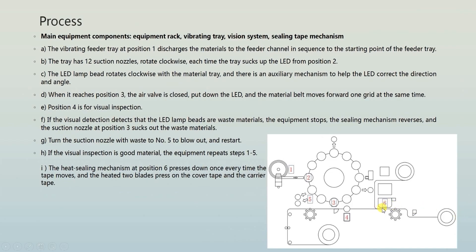The LED then reaches station number six where horizontal packing is done. The roll wraps the product and seals it at particular intervals — this is rotary sealing, so at particular spacing it seals and cuts. This is the packing machine.